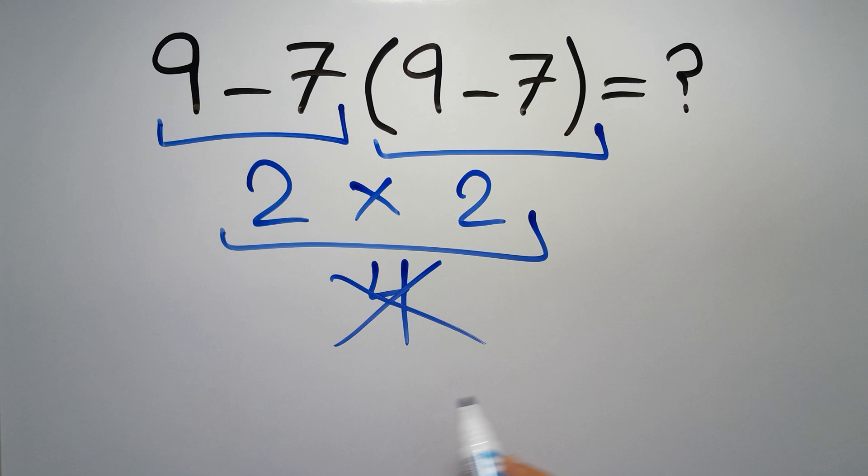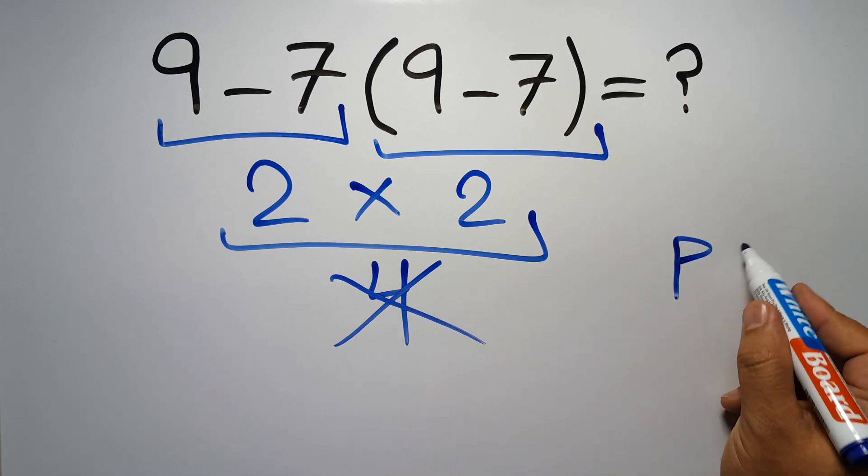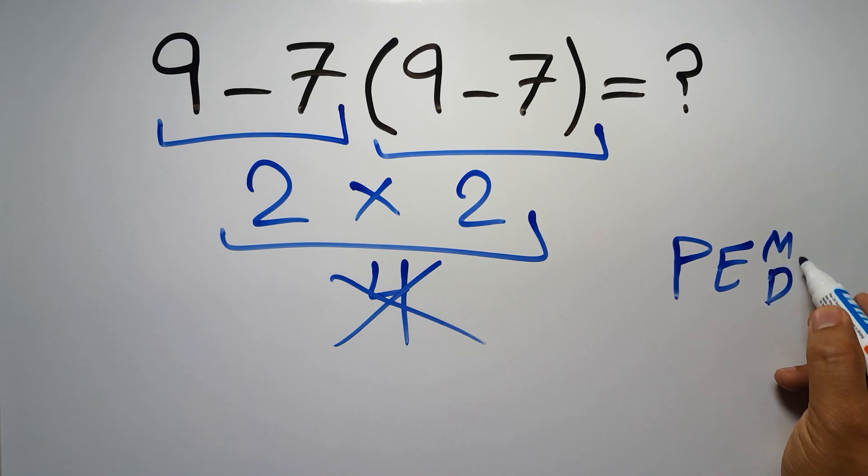But this answer is not correct, because according to the rule of operations, first we have to do parentheses, then exponents, then multiplication or division, and finally addition or subtraction.